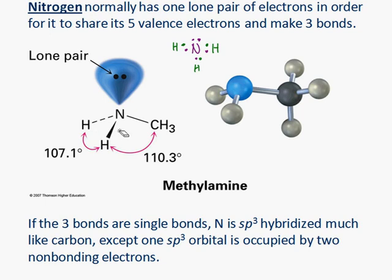So sp3, sp3, sp3. The fourth hybrid orbital will be occupied by the lone pair, the non-bonding electrons. So just like we saw on oxygen before in formaldehyde, the lone pairs can occupy a hybrid orbital.